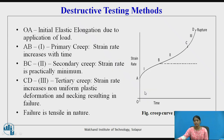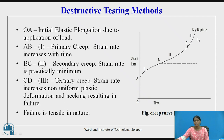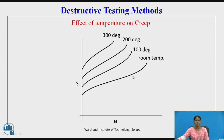The graph is plotted as strain versus time. The region O to A is the elongation due to application of load. The region A to B is known as primary creep, where the strain rate decreases with time. The region B to C is secondary creep, where the strain rate is practically minimum. The region C to D is tertiary creep, where the strain rate increases non-uniformly, and plastic deformation and necking result in failure — which is tensile in nature. This graph also shows the effect of temperature on creep, with curves at room temperature, 100, 200, and 300 degrees.